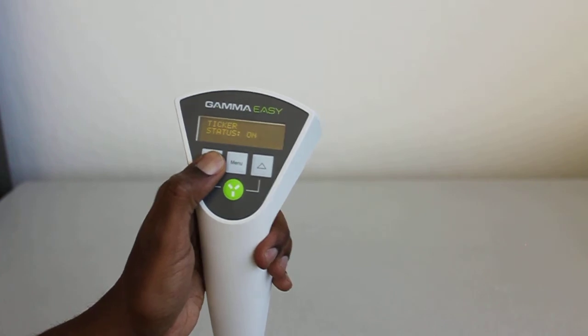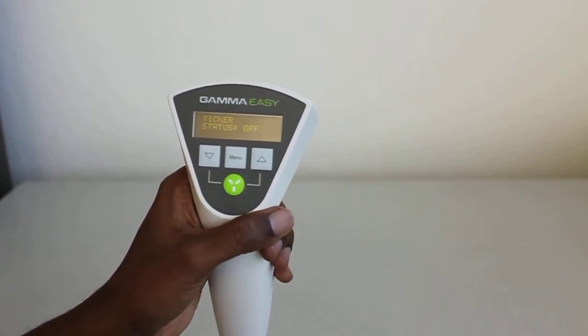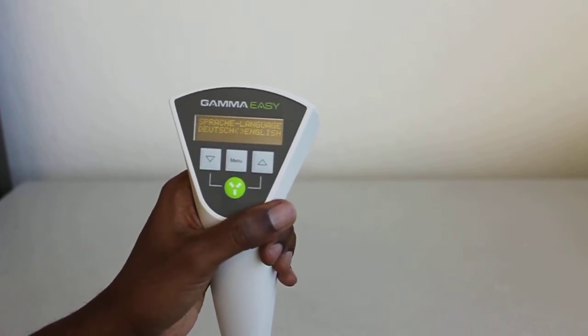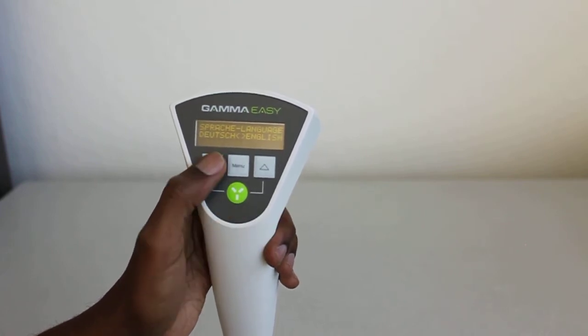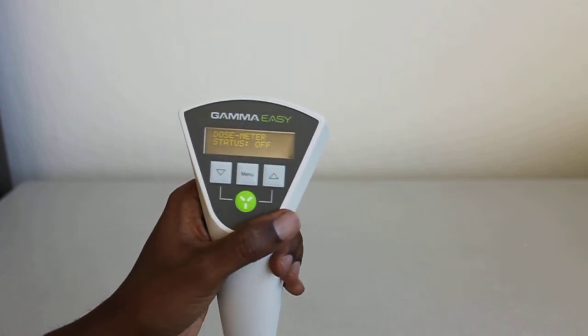I'll show you in a different video what it sounds like when we have some actual radiation samples. Hit the menu button again and this time you'll go to the language selector where you can select German or English. Once more and you're back to the beginning of the menu, which is dosimeter status.